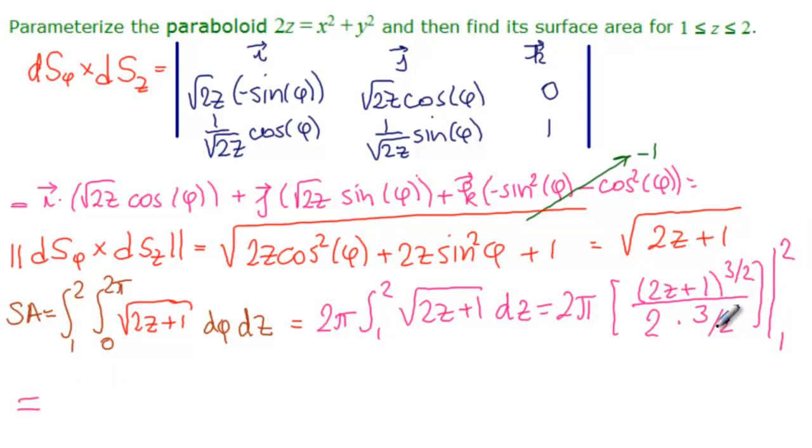So these two cancel. So we have 2 pi over 3. And first we substitute 2, so 4 plus 1, so 5 to the 3 halves, minus, and then we substitute 1, so 3 to 3 halves.